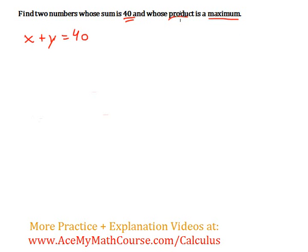And whose product, I'm going to call the product P, is a maximum. Now the product of x and y will be just x times y.